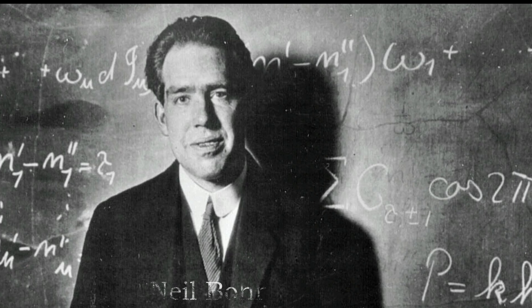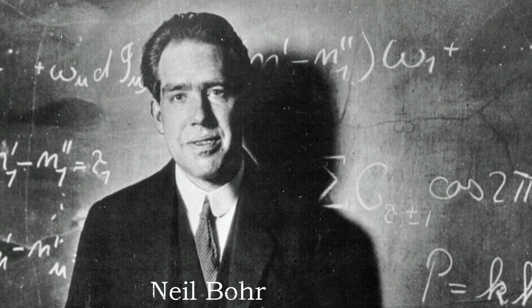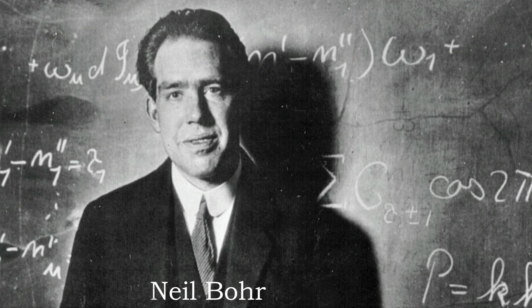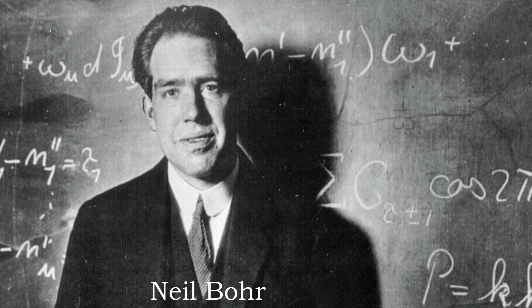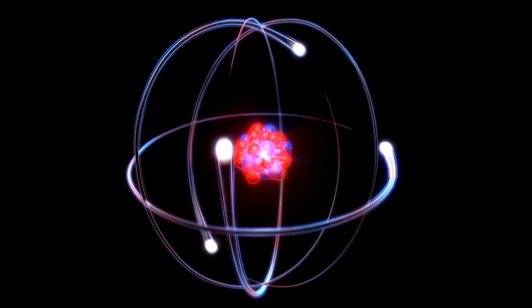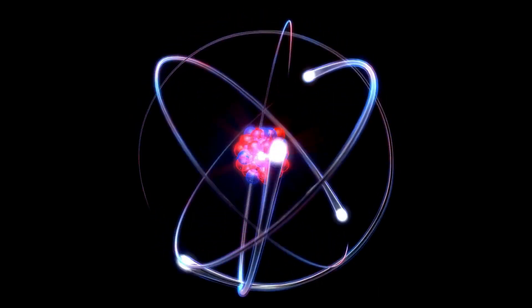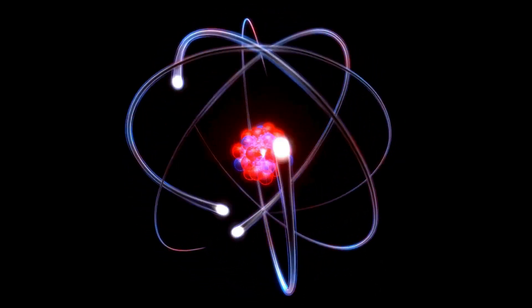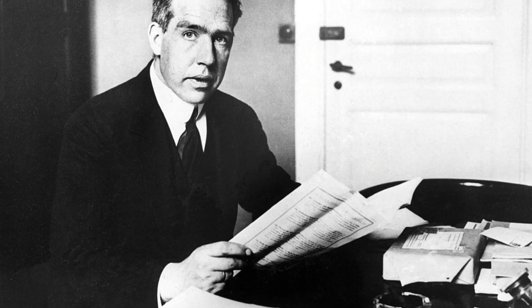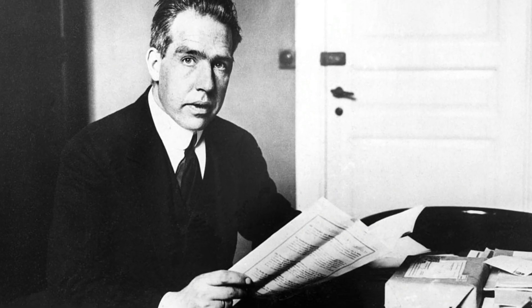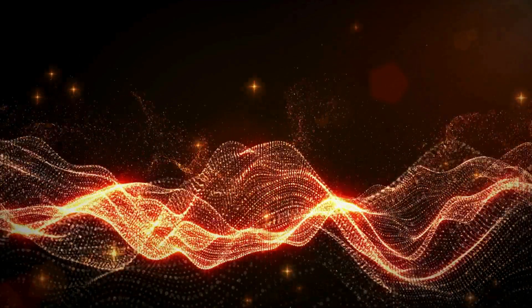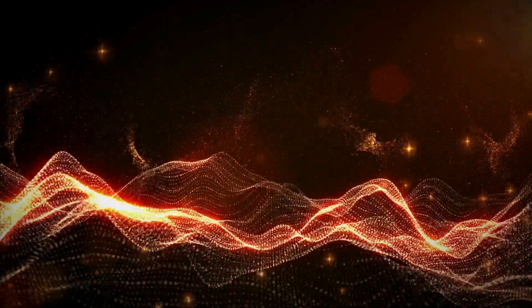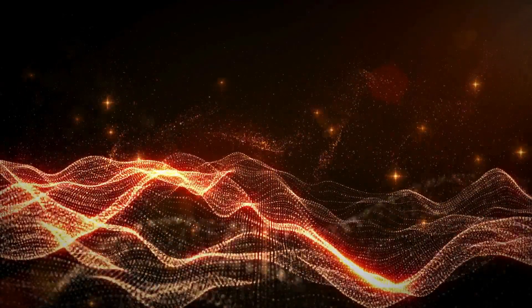Bohr responded by saying that Einstein and his colleagues' criterion for physical reality was ambiguous in quantum systems. They assumed that a system, like an electron, had definite values for certain properties, like its momentum, before those values were measured. But Bohr explained that quantum mechanics kept different possible values for a particle's properties until one of them was measured. You couldn't assume the existence of an element of reality without specifying an experiment to measure it.